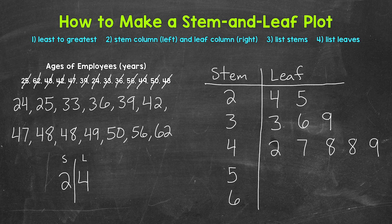Now we have 50, so we need to move down to the stem of 5. Stem of 5, leaf of 0. Then 56 — stem of 5, leaf of 6. And then lastly, we have 62 — stem of 6, leaf of 2. And that's it for our leaves.